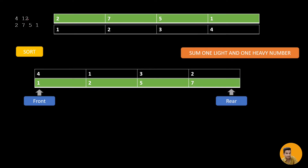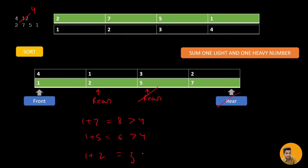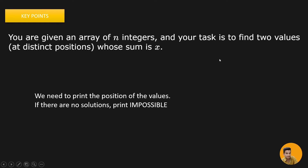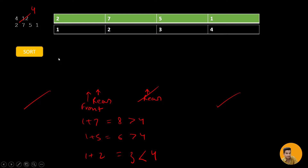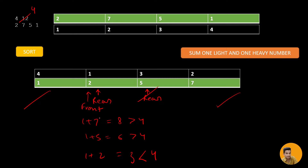Now let's try a scenario where the target is 4. Again 1 plus 7 is 8, greater than 4, so decrease the rear. Now 1 plus 5 is 6, still greater, so decrease the rear again. Now 1 plus 2 is 3, smaller than 4, so I should increase the front to include heavier numbers. But now front and rear are pointing at the same position — not distinct positions!